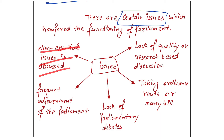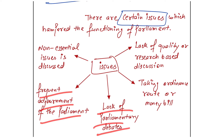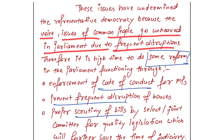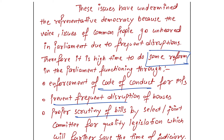These issues have undermined representative democracy because the voices and issues of common people go unheard in parliament due to frequent disruption. Therefore, it is high time to introduce reforms. Always use linking lines when transitioning from one paragraph to another. Some reforms in parliament — highlight this for the examiner — should include enforcement of a code of conduct for MPs.